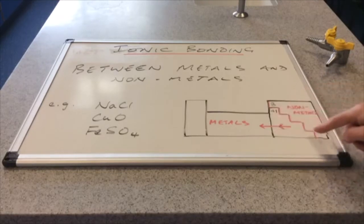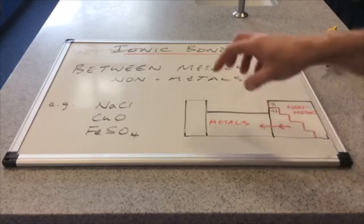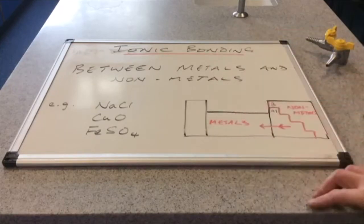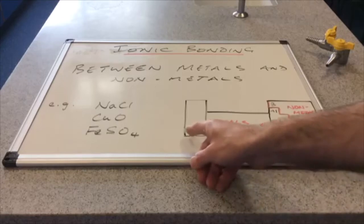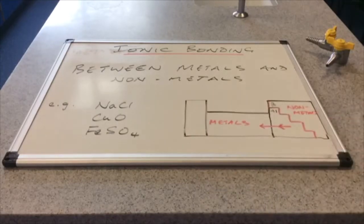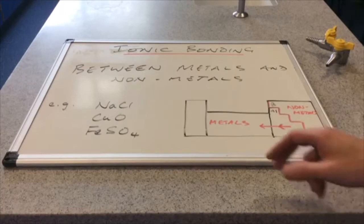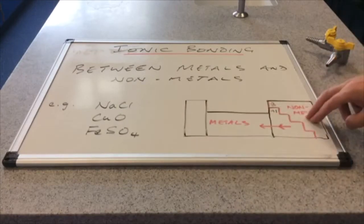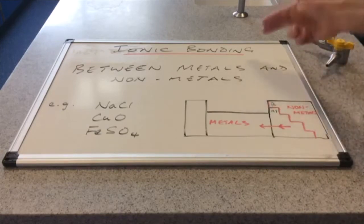So that includes all the elements in here. The transition elements, which are these elements in the middle of the periodic table. And of course groups 1 and 2, they're all metals as well. So if you've got something in here bonding with something in here, you will have ionic bonding.